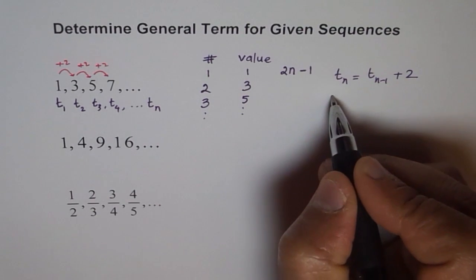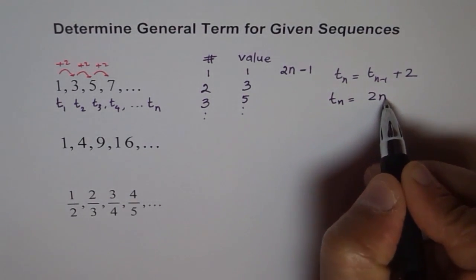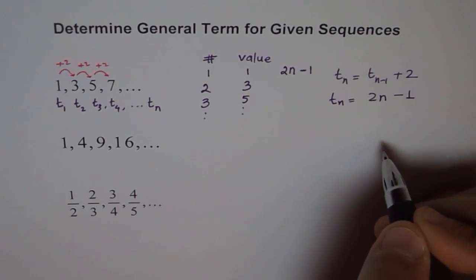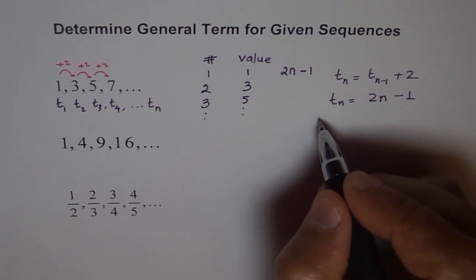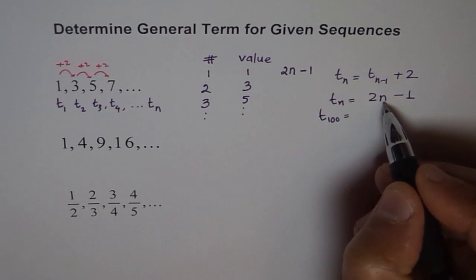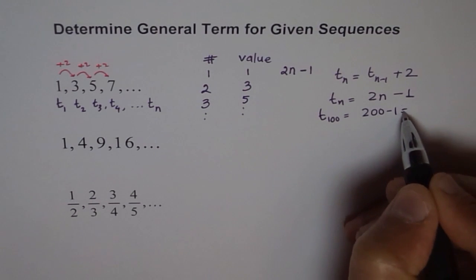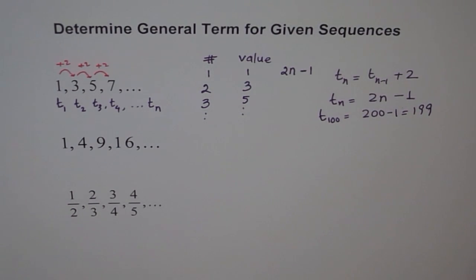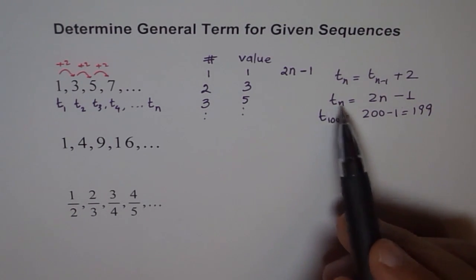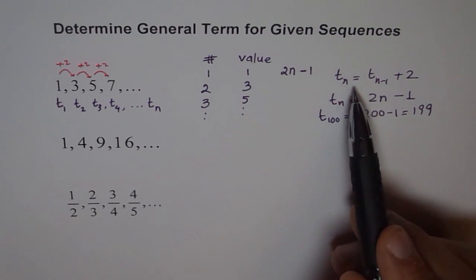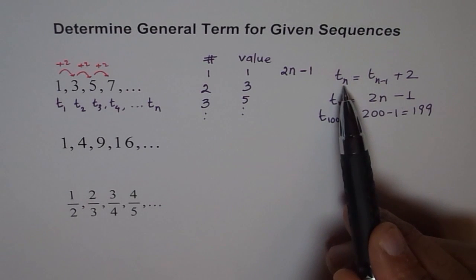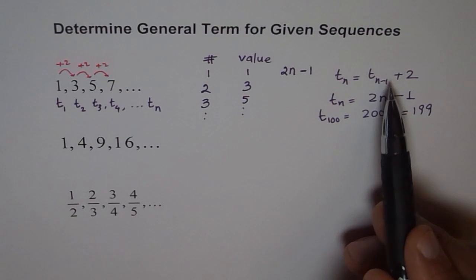We can give a general formula here as tn equals to 2 times n minus 1. Now, the beauty here is, if I want to know what is the 100th term, you can put n as 100 here. You can write t of 100 equals to 2 times 100, which is 200 minus 1, so it is 199. Straight, you get the answer. That is a general term formula in this particular case. The advantage with this general term is that it is not dependent on the previous value. That one is also correct, but then you need to know n minus 1 value to find tn value. That type of formula is called recursive formula.